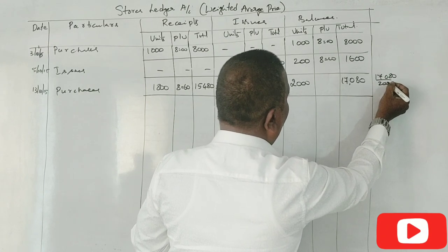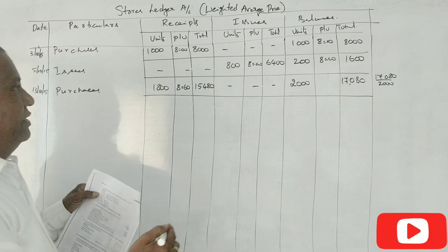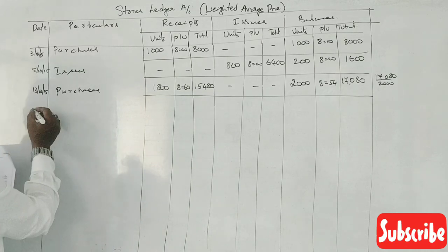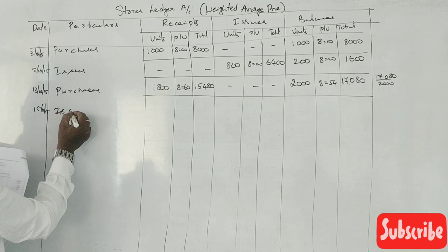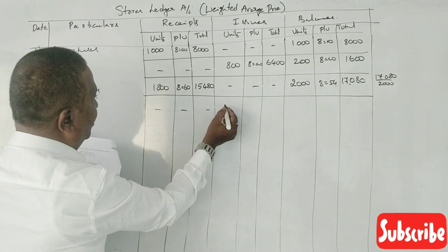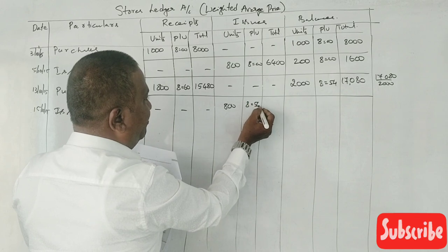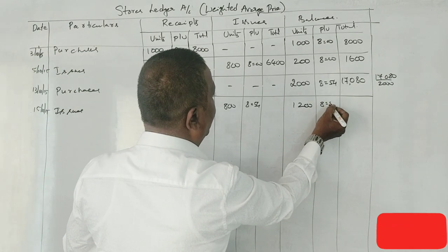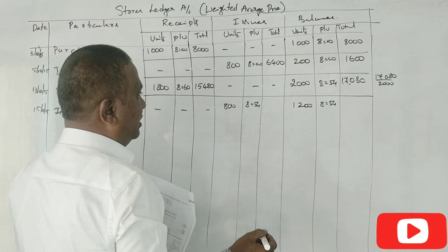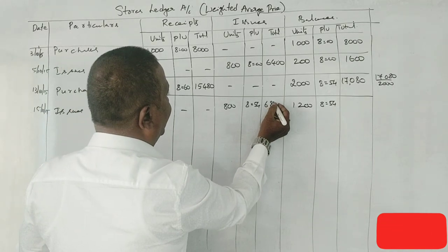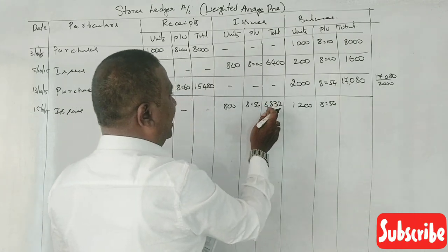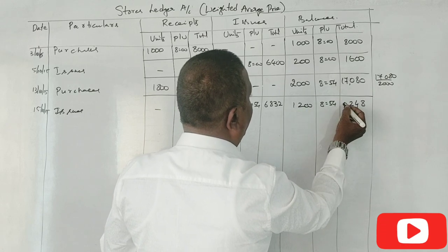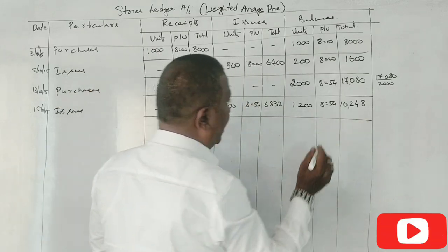₹17,080 divided by 2,000 units = ₹8.54 per unit. 15th of October: 800 units issued at ₹8.54 — ₹6,832. Balance: ₹17,080 minus ₹6,832 equals ₹10,248.